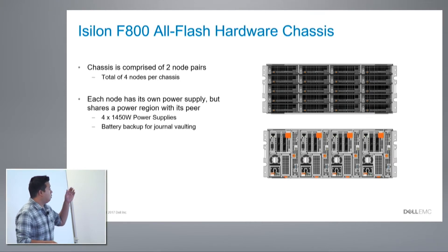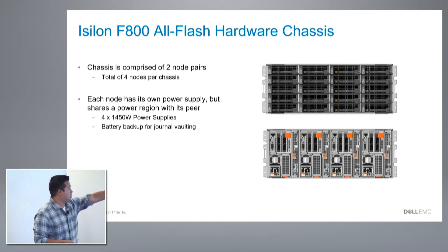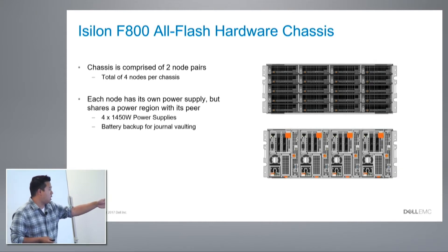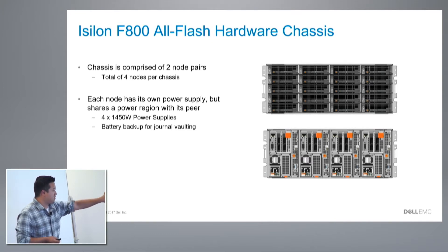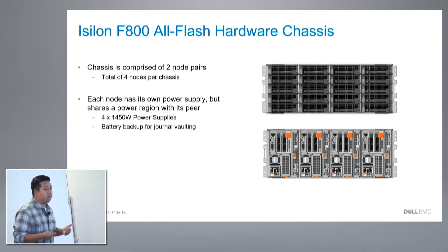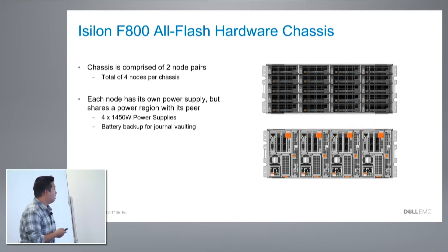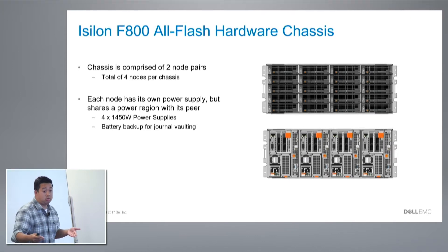At a chassis level, there are four nodes in a chassis. We treat the left two and the right two as a concept of peers. Peers share power regions — each node has a single power supply, but the two together create a power region so if one goes out, the other keeps it powered. There is also a PCIe link between both nodes that we use for the mirrored journal, giving you a copy of the journal on the other node as well as your own local copy.